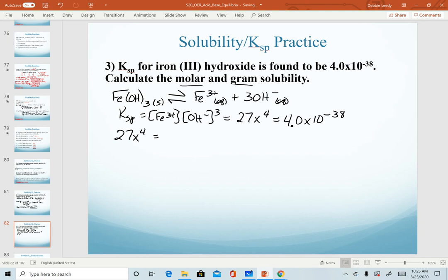To find our molar solubility, we are solving for x. I'm using this mathematical equation of 27x⁴ set equal to our Ksp value. Remember our order of operations. I need to divide by 27 first. So x⁴ is then equal to 1.48148 × 10⁻³⁹. And now I need to take the 4th root of this value to solve for x.